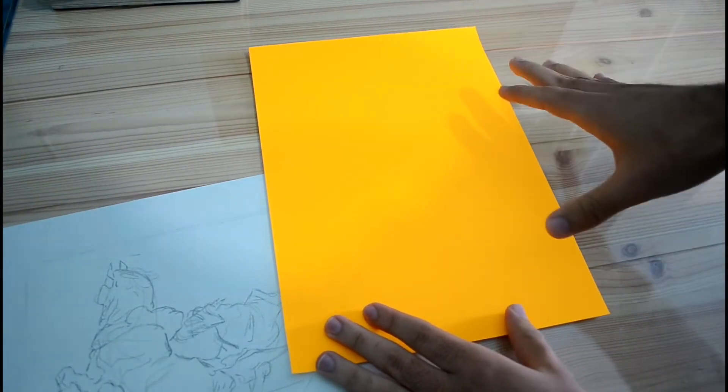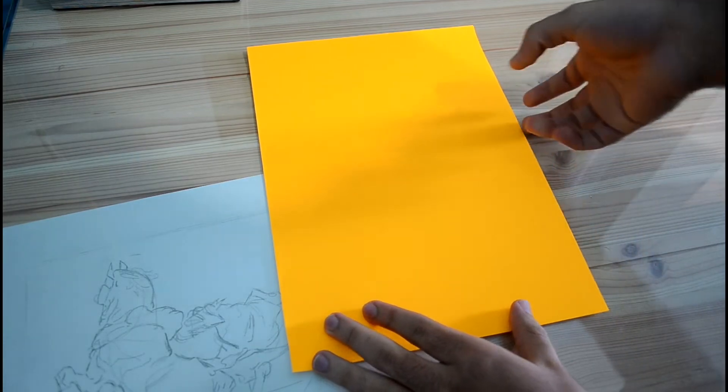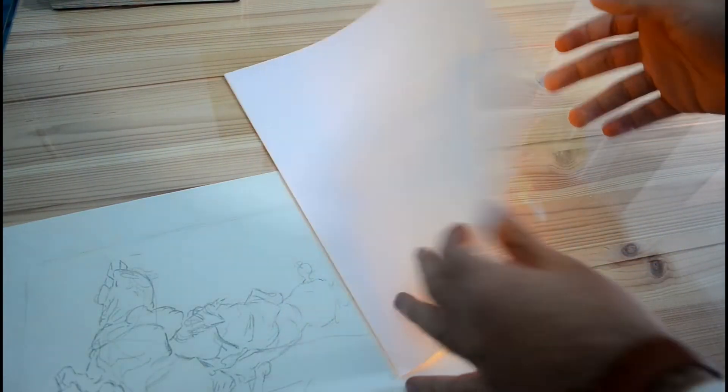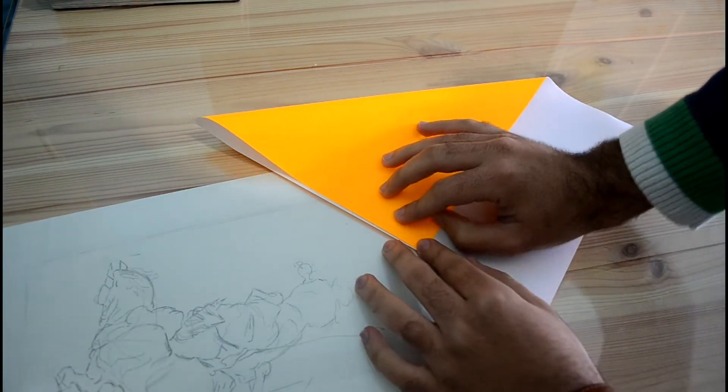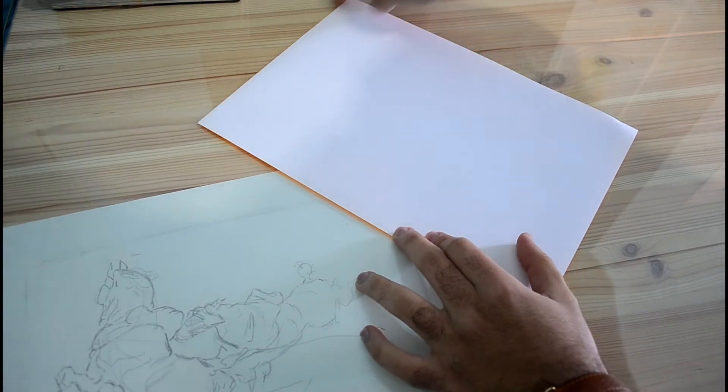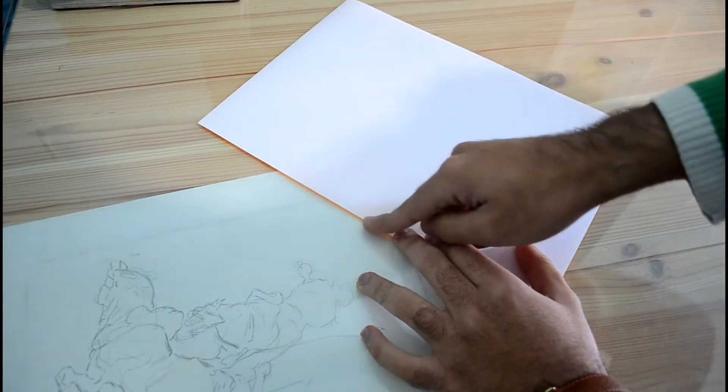First step, we're going to make a square out of this paper. Turn the paper to the other side if it has two different colors. Now we're going to make a triangle by taking this side of paper and bringing it to this one.